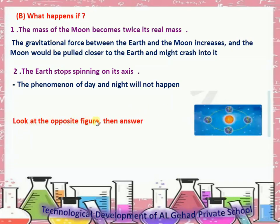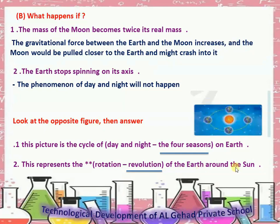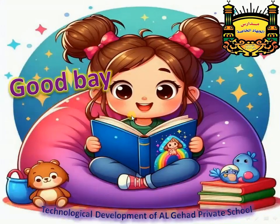Look at the opposite figures and answer. Number 1: This picture shows the cycle of the four seasons on earth. Number 2: This represents the revolution of the earth around the sun. Thanks my students, goodbye and wish you more success.